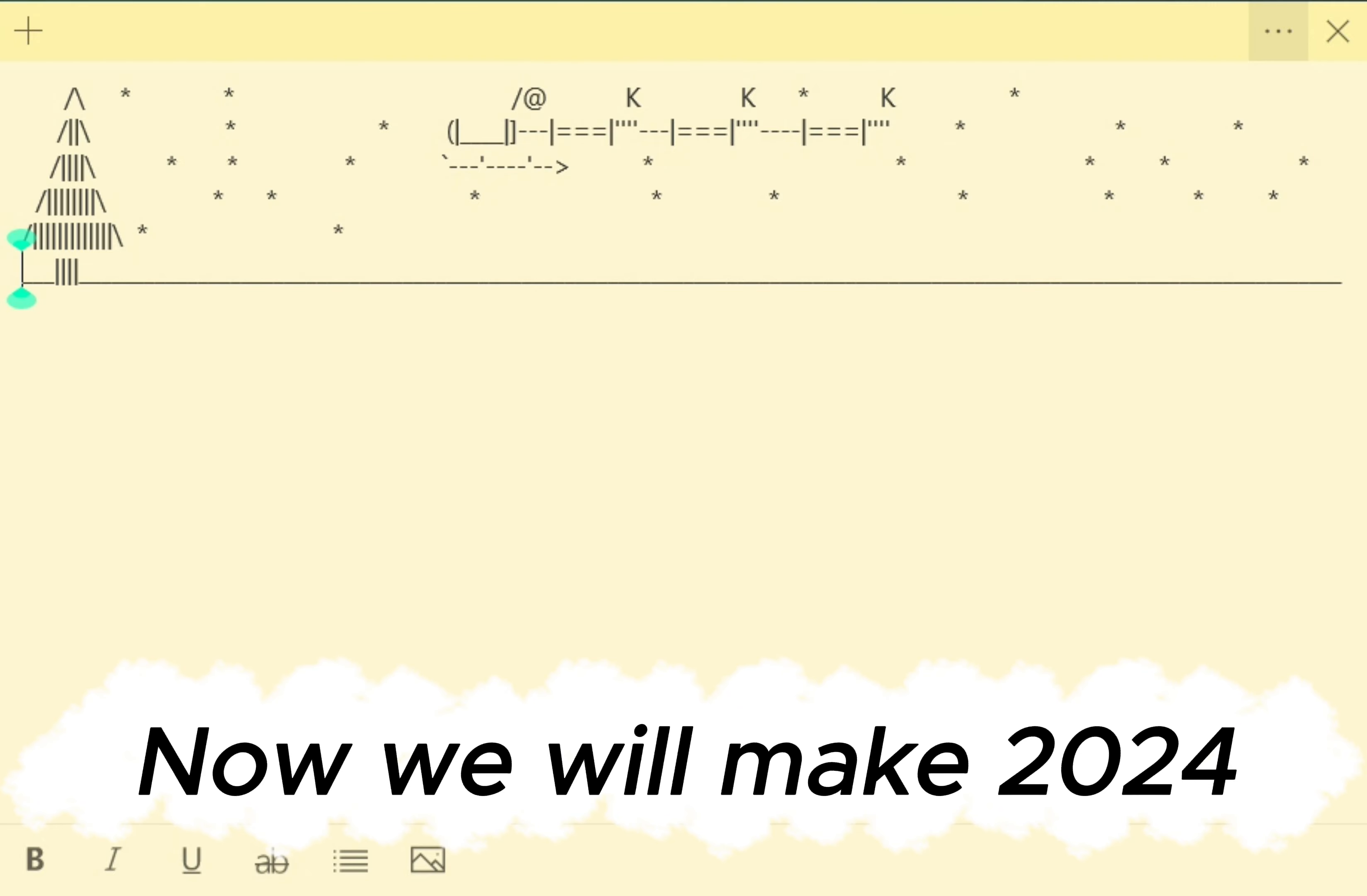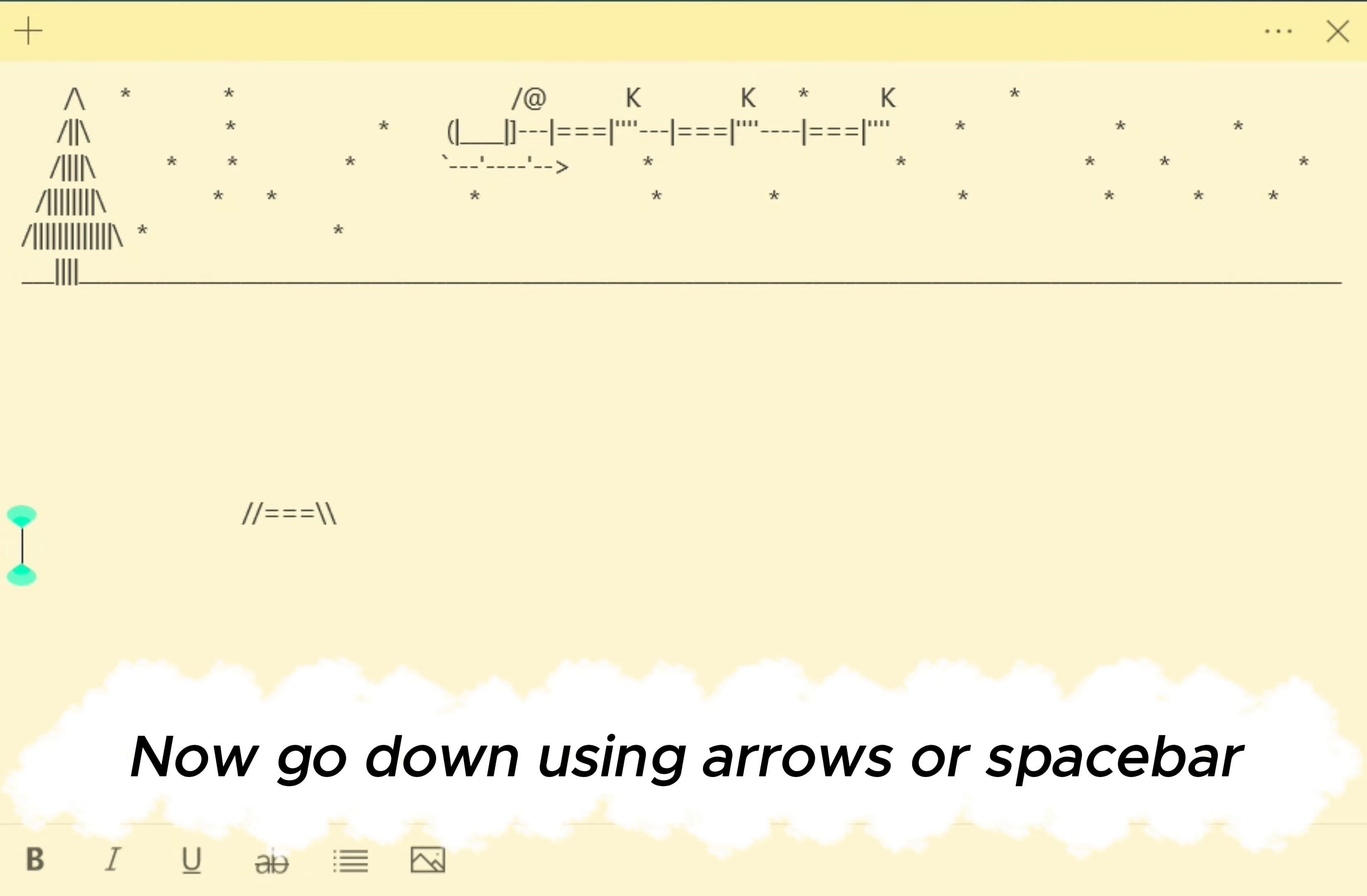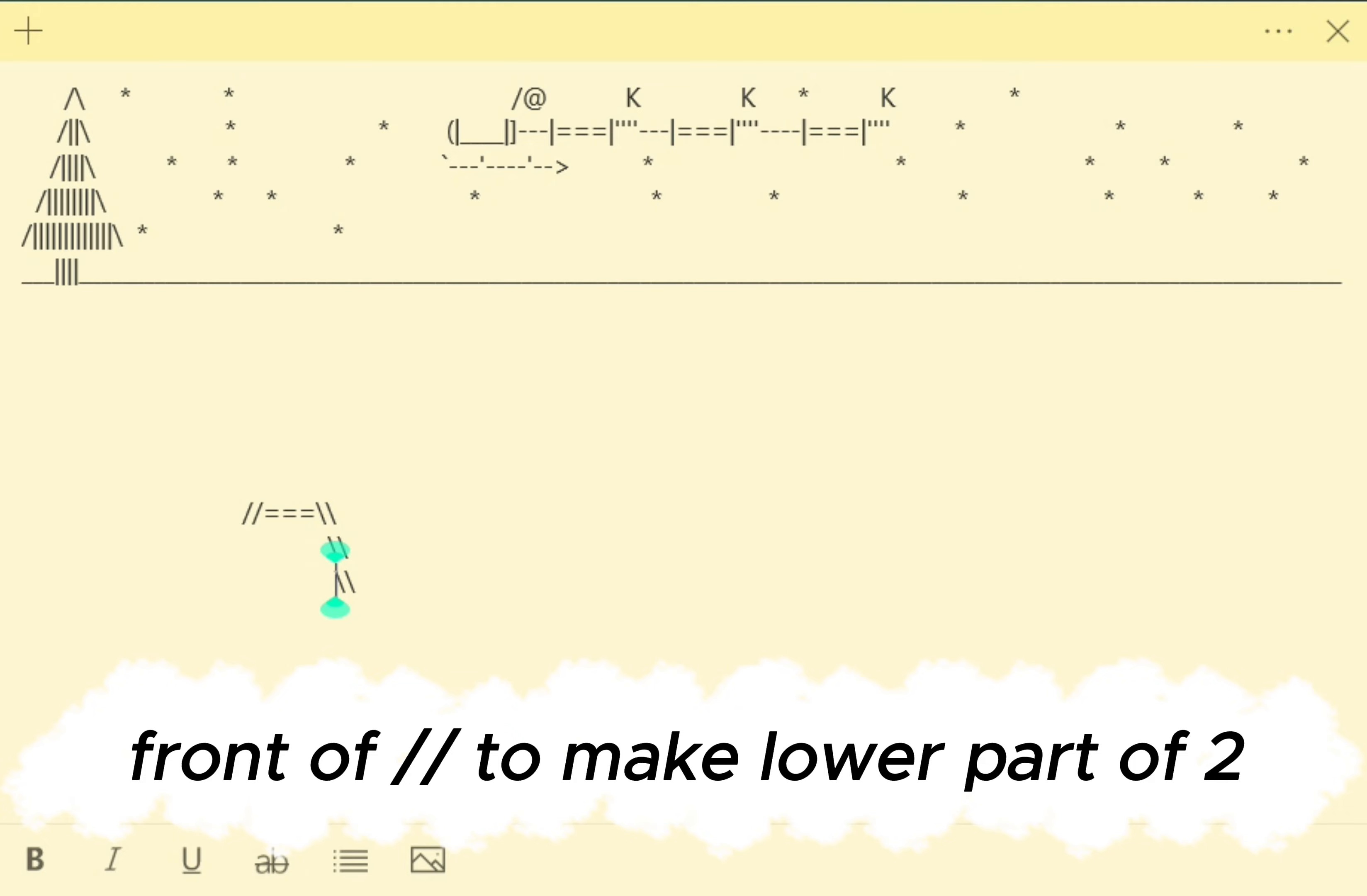Now we will make 2024. This does take a lot of space. To make two start with. Then put. And close it with. Now go down using arrows or space bar. Connect with one from above. And do it again. Now put together. Front of. To make lower part of two.